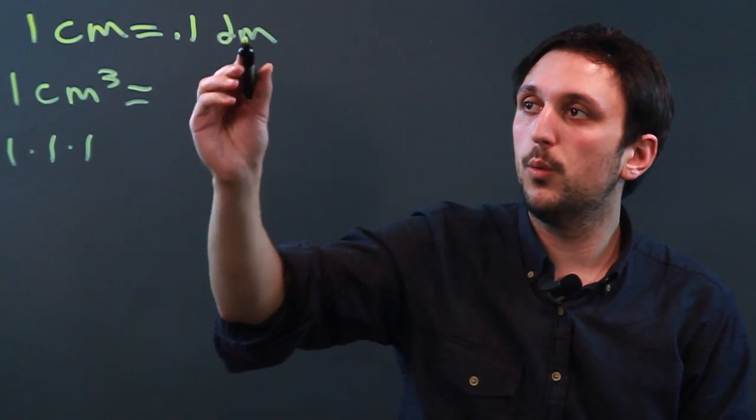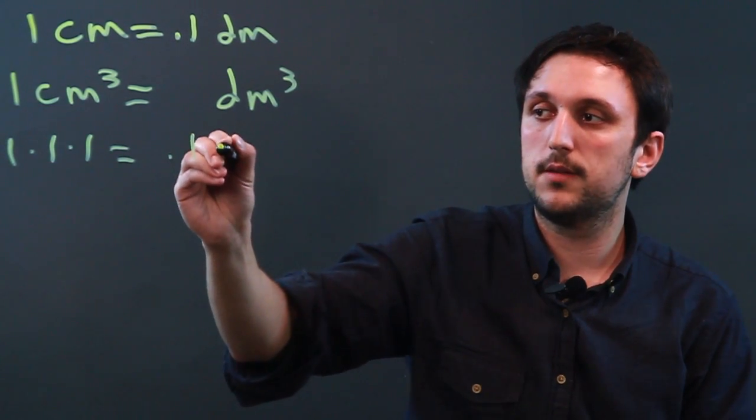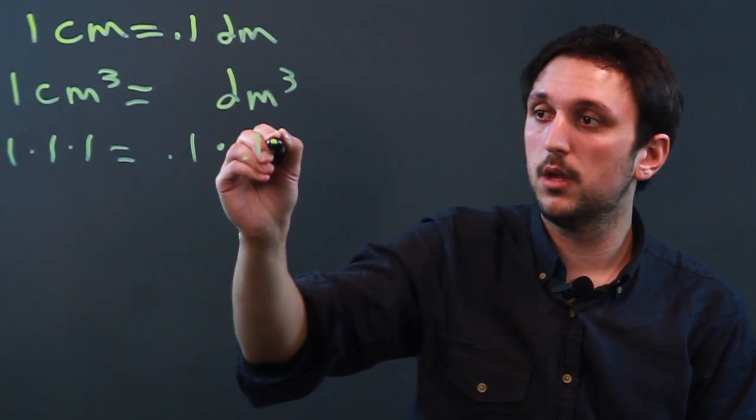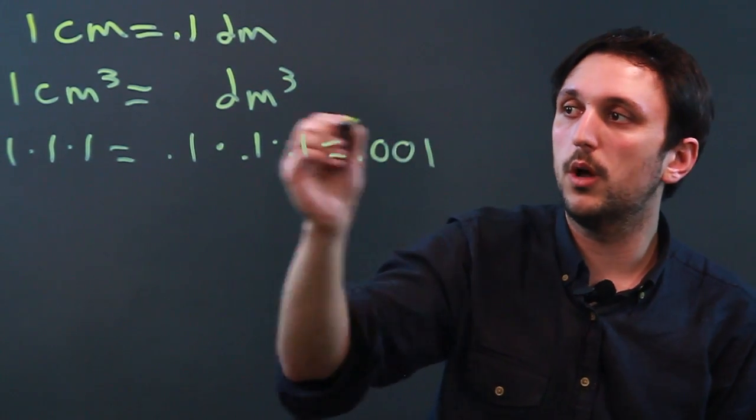So with decimeters cubed, we'll do the math down here, and we get 0.1 times 0.1 times 0.1, which equals 0.001.